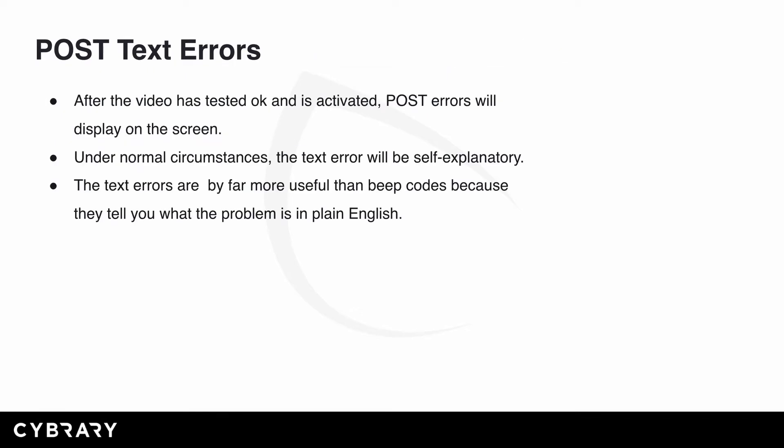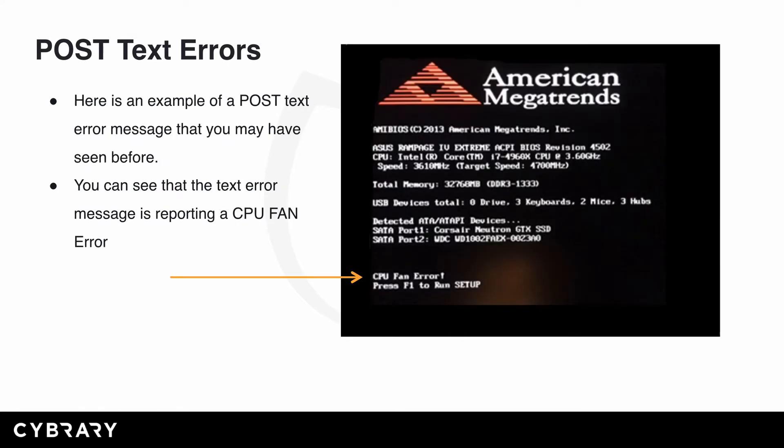Let's move on to POST text errors. After the video has tested okay and is activated, POST errors will display on the screen. Under normal circumstances, the text error will be self-explanatory. Text errors are by far more useful than beep codes because they tell you what the problem is in plain English. Here's an example of a POST text error that you may have seen before — the text error message is reporting that a CPU fan error has occurred.